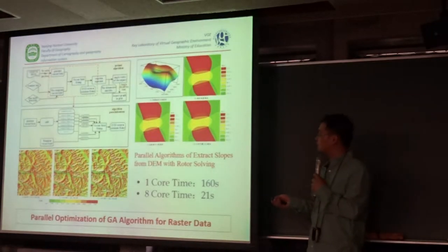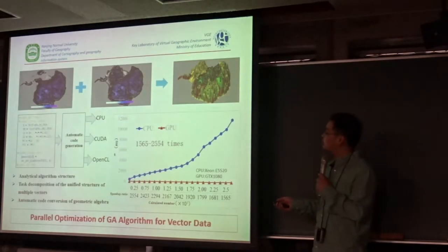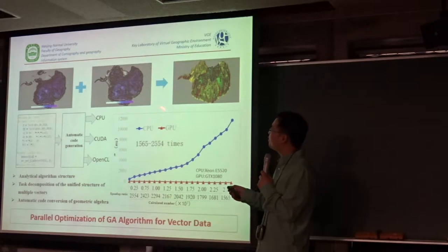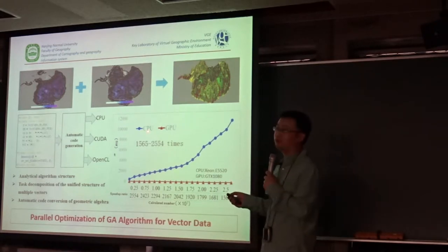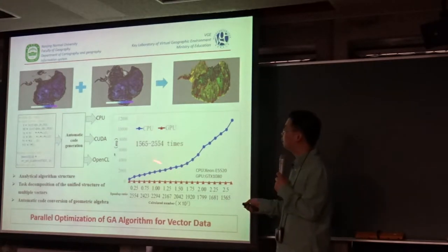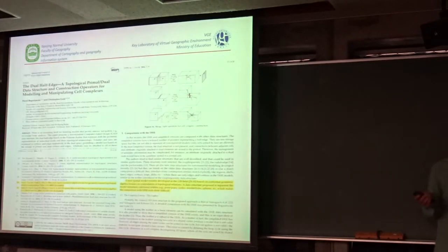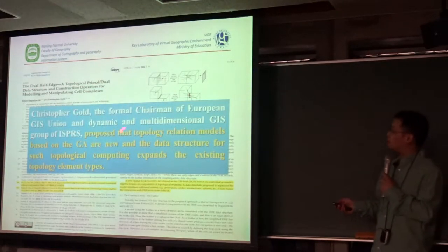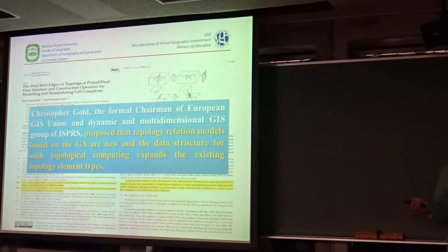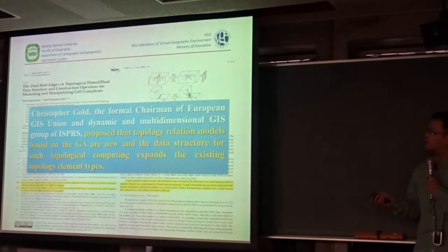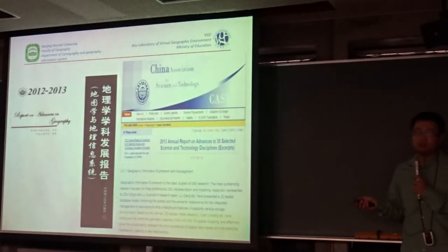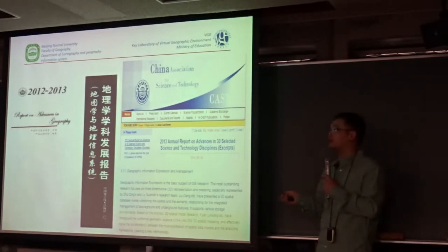We did some benchmarks. For one step of the intersection between triangle networks, we achieved more than 1,500 times acceleration. Our computational models have been reported and accepted by the European GIS union, and also reported in the annual report of Chinese scientific researchers.